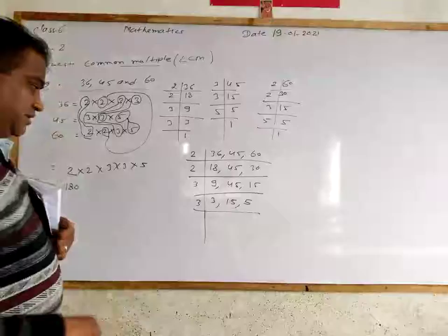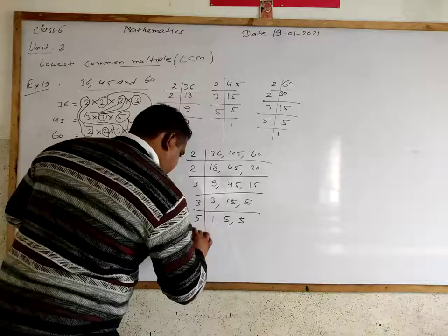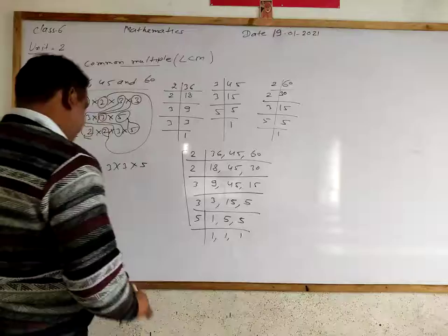Now 9, 45, and 15, all 3 are divided by 3. So now again divide by 3. Now this is the smallest digit which is divided by 3. We get 1, 5, and 5.